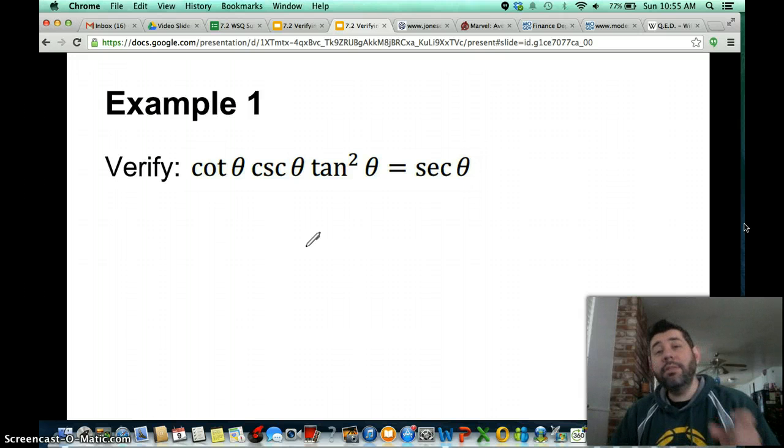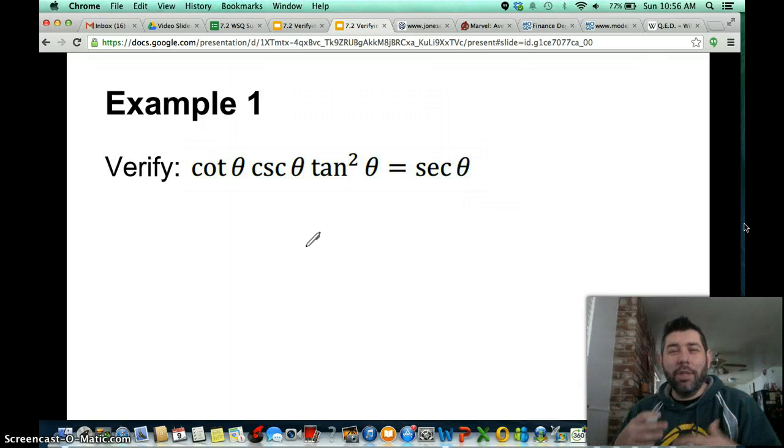So there are two methods for doing these proofs. One method is to start from one side of the equation and work your way and show that it's equal to the other side. Another method is to use both sides and show that both sides are equivalent to something like 1 equals 1 or secant equals secant. I choose to do the first strategy, the first approach, just because it gives you a bit of a stronger base. It gives you stronger fundamentals.